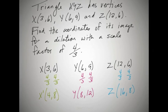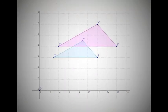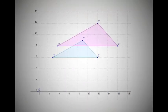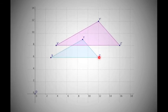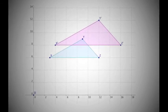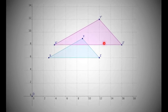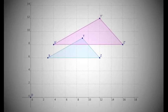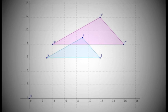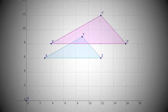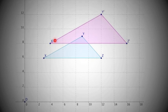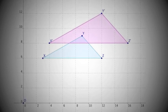Alright, so that problem they actually wanted us to graph, so here is our original shape with the coordinates. And here is our new dilation. Notice x, x prime, y, y prime, z, and z prime. So, this new shape is a 4 thirds dilation of the original shape.